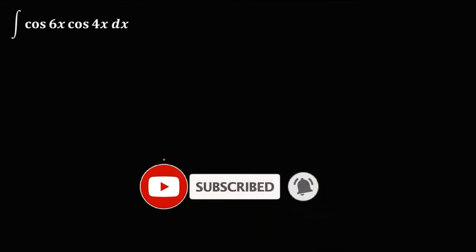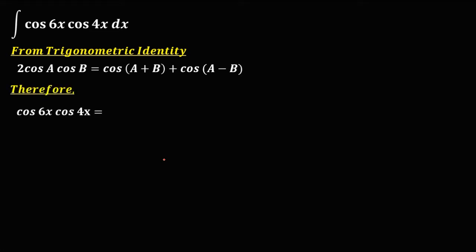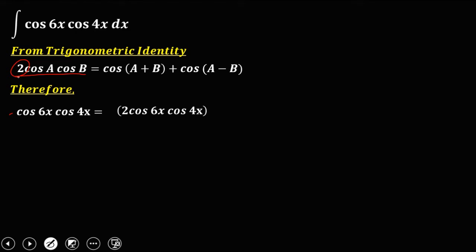Let's have this problem: the integral of cosine 6x times cosine 4x dx. From the trigonometric identity, 2 cosine a cosine b is equal to cosine(a plus b) plus cosine(a minus b). From the given cosine 6x cosine 4x, we need to rewrite this in that form, so we multiply 2 for the given: 2 cosine 6x cosine 4x.